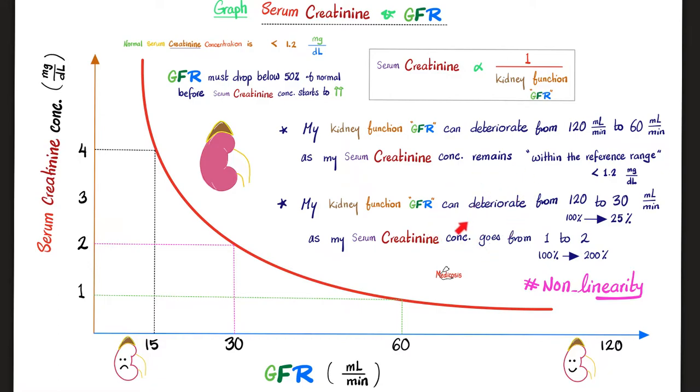GFR must drop below 50% of its normal value before the serum creatinine starts to go up and show up as abnormal. Suppose that my kidney function deteriorated from 120 to 30. I went from 100% to about 25%. My serum creatinine went from 1 to 2, from 100% to 200%. You see, it's all about non-linearity. Do not say the patient's creatinine just went up from 1 to 1.5, no big deal. It's actually a very big deal.